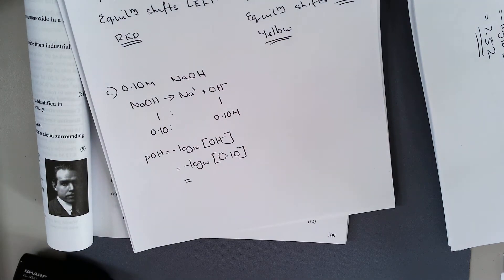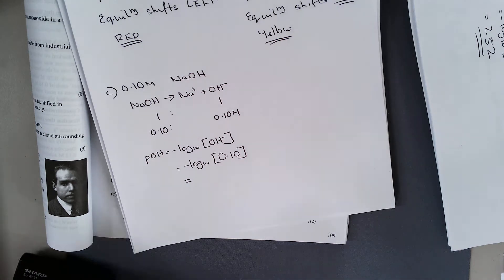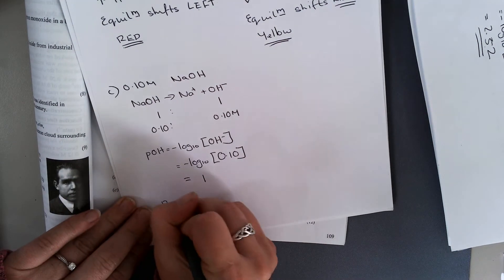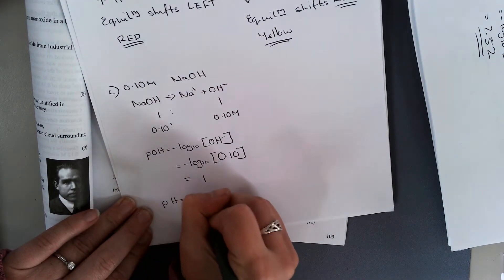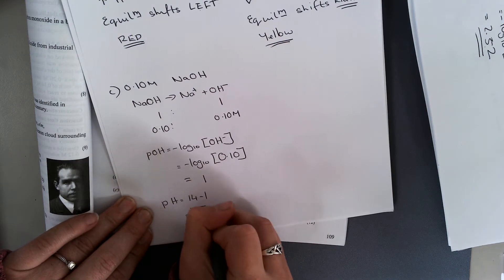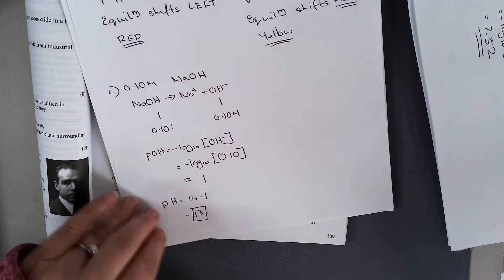Minus log of 0.1 is going to give me 1. You're asked for your pH. pH is 14 minus 1. My pH there is 13.